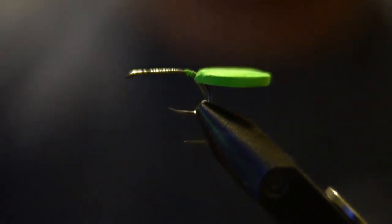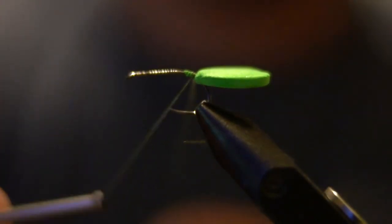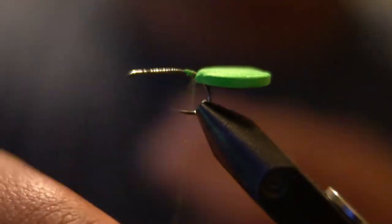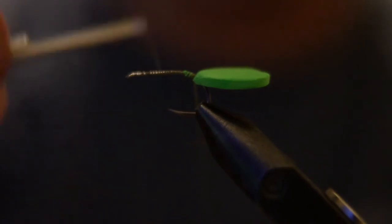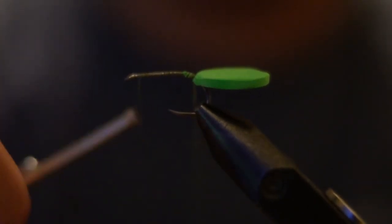And for the feather I like to do a dubbing loop, just since I'm using such thin thread it makes it a little stronger, not that it needs it.